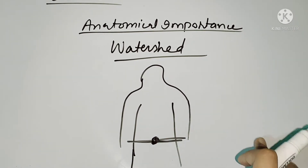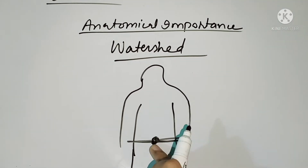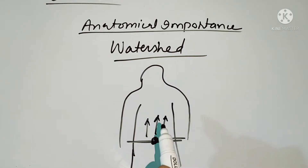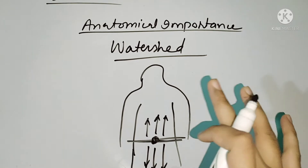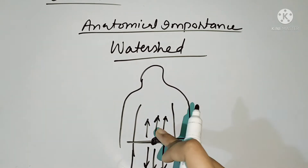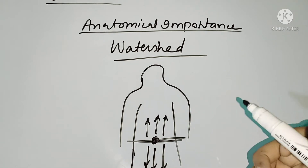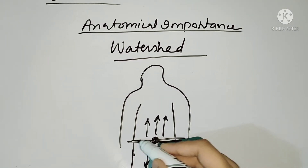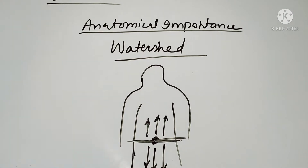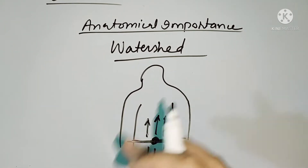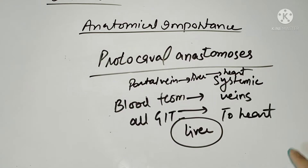The umbilicus is a watershed because venous blood and lymphatic drainage differ above and below it. Blood flow above the umbilicus drains differently from blood flow below the umbilicus — the umbilicus acts as a barrier between these two drainage territories. The umbilicus corresponds to the T10 dermatome level.